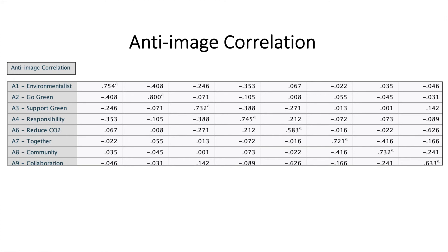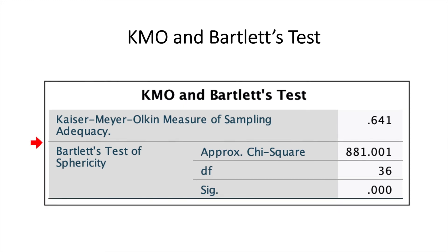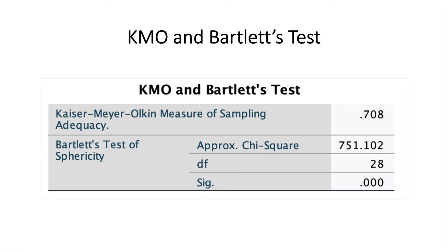After deleting the items, if you check the value for KMO, the value is 0.708, which is higher compared to when the items were not deleted, where the KMO value was 0.641. After deleting, the value has increased. So watch out for the third part, which will cover Total Variance Explained and Scree Plot. Thank you.